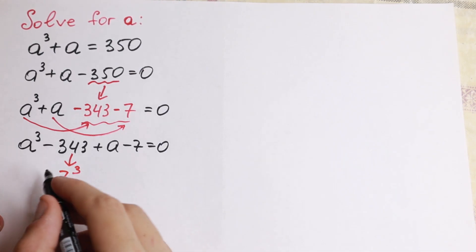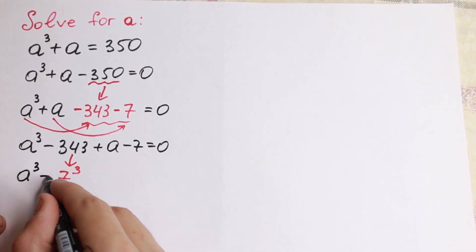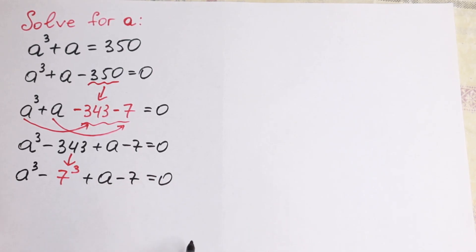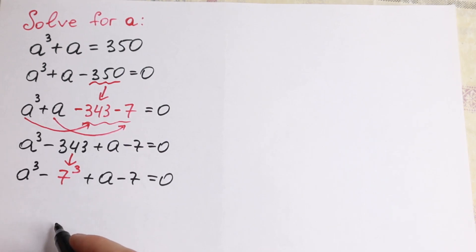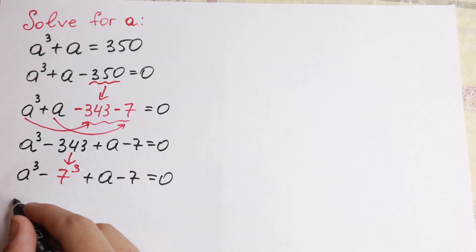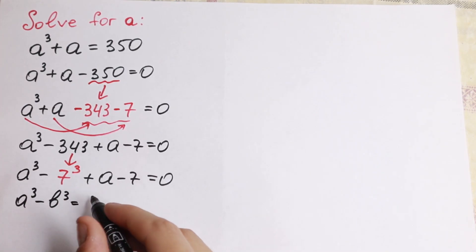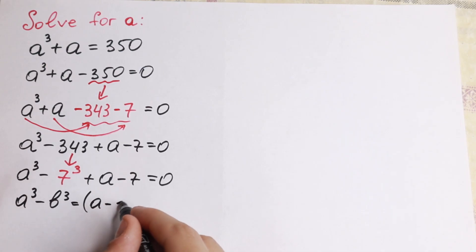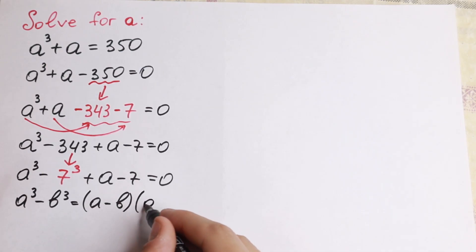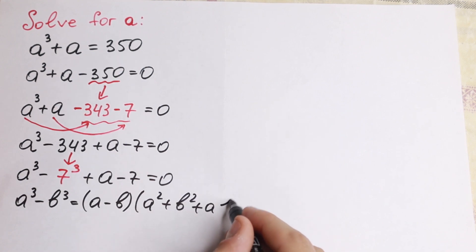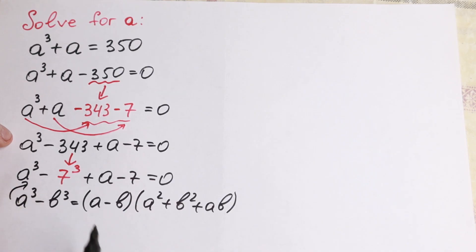With this a cube we will have the formula a cube minus 7 cube, and of course plus a minus 7 equal to 0. So right now we apply the formula a cube minus b cube. If we have a cube minus b cube it equals a minus b times a square plus b square plus ab. We can apply this formula right here — the difference of two cubes.